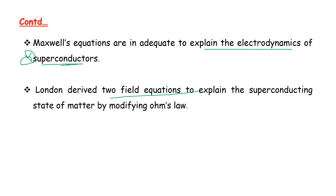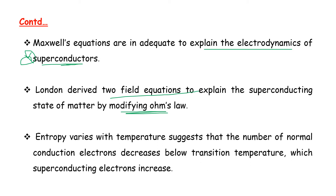London derived two field equations to explain the superconducting state of matter by modifying Ohm's law. Entropy varies with temperature: the number of normal conduction electrons decreases below the transition temperature, while the superconducting electrons increase.